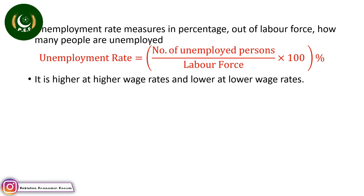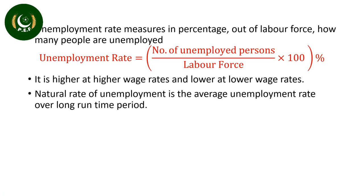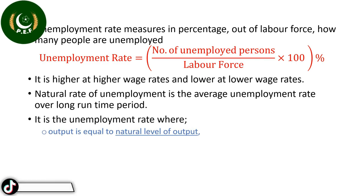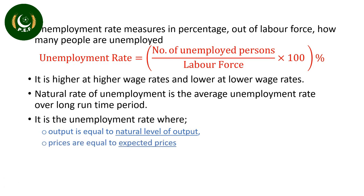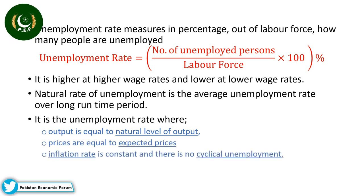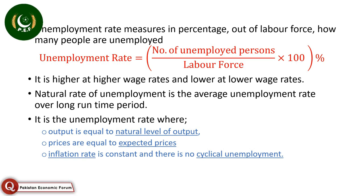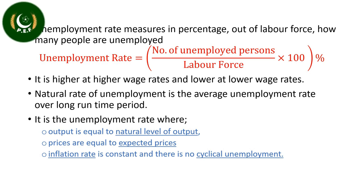The natural rate of unemployment is the average unemployment rate over a long period of time. In more technical words, it is the unemployment rate where output is equal to the natural level of output, prices are equal to expected prices, inflation rate is constant, and there is no cyclical unemployment. However, to understand it fully, we first need to understand natural level of output, expected prices, inflation rate, and cyclical unemployment. We shall cover these concepts later on.